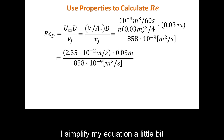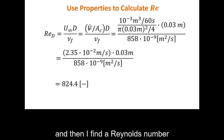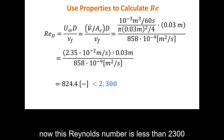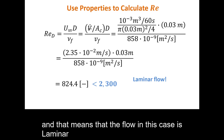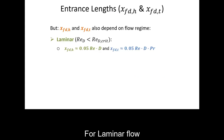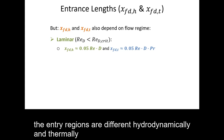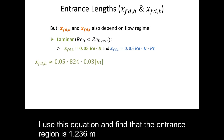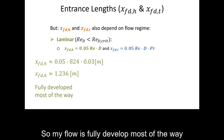After simplifying, I find a Reynolds number of 824.4. Since this is less than 2300, the flow is laminar. For laminar flow, I check the hydrodynamic entry length using its equation and find it is 1.236 meters, so the flow is hydrodynamically fully developed for most of the pipe.